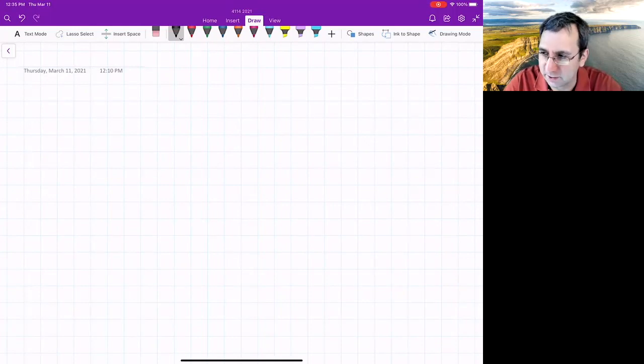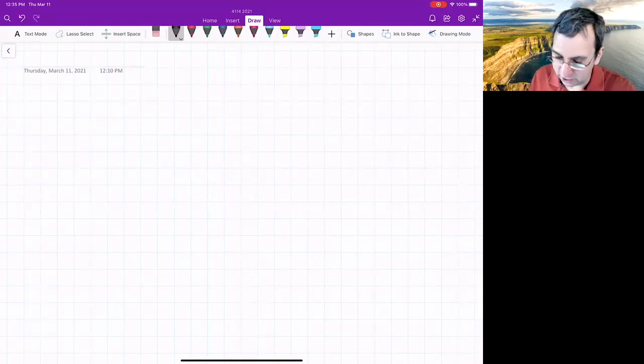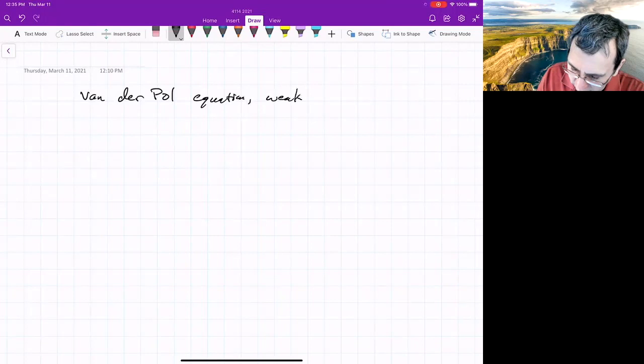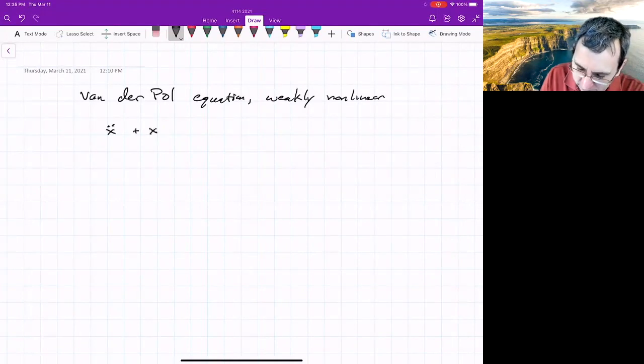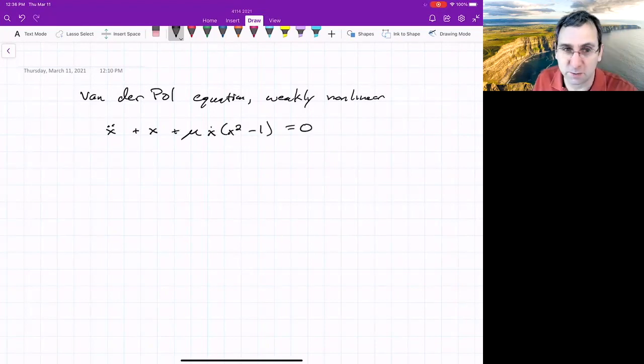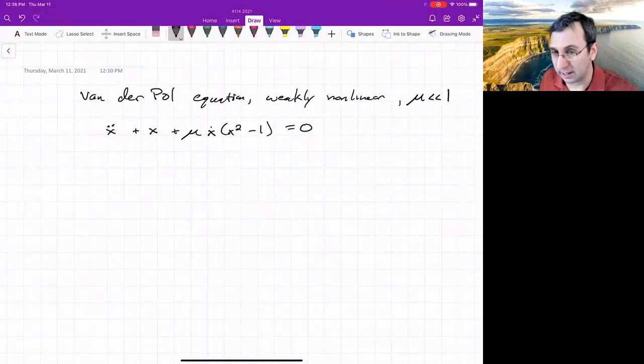Last time we ended talking about the Van der Pol oscillator in the highly nonlinear limit. Now we're going to look at the just slightly nonlinear limit. So this is the Van der Pol equation, written in a different way. Weakly nonlinear would be x double dot plus epsilon x dot (x squared minus 1) equals zero. The weakly nonlinear limit is mu, or epsilon, much less than one. This will lead into a discussion of averaging for weakly nonlinear oscillators.